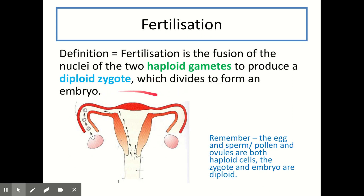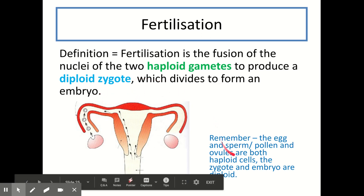A final reminder: gametes — so sperm and egg in animals, or ovule and pollen in plants — are all haploid cells, whereas the zygote and the embryo are both diploid.